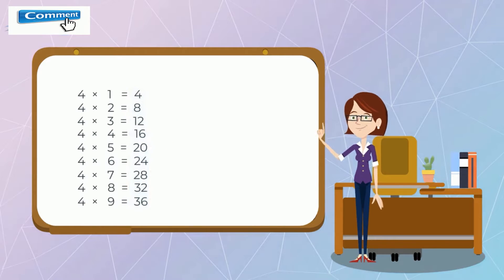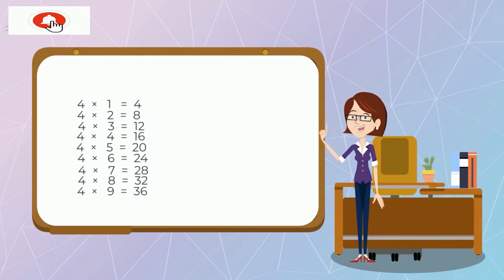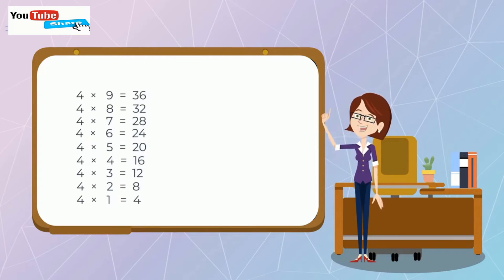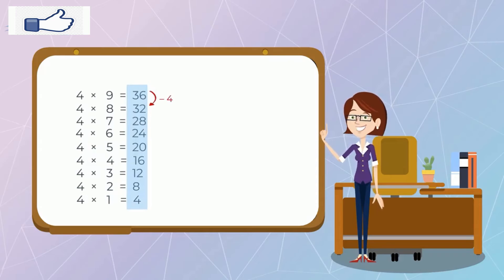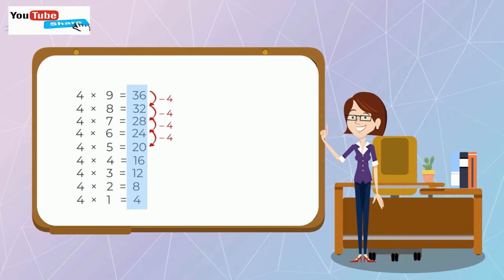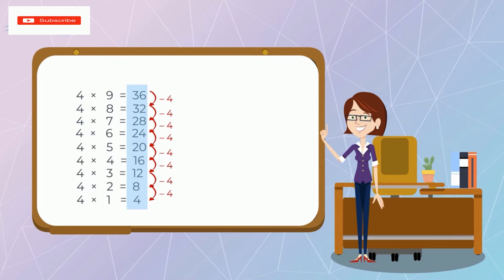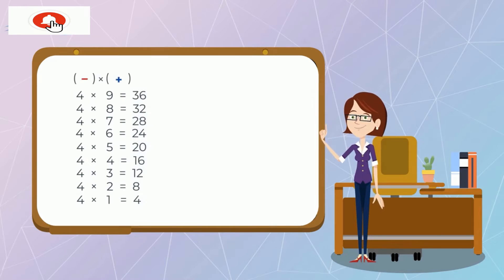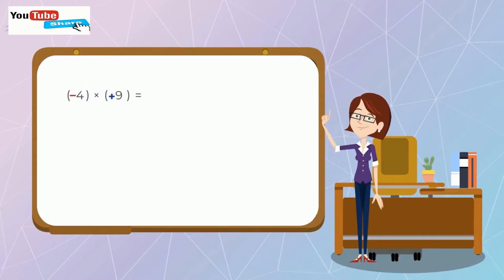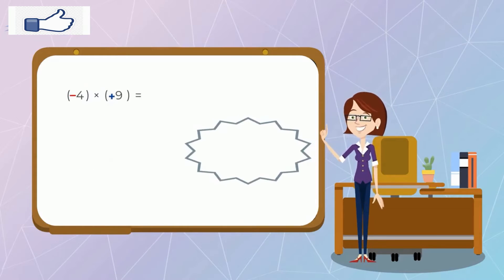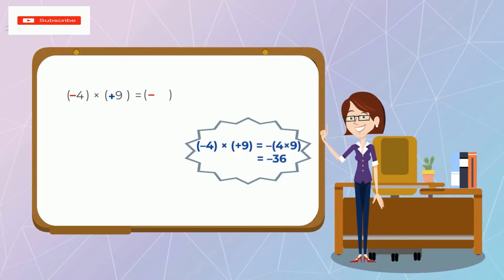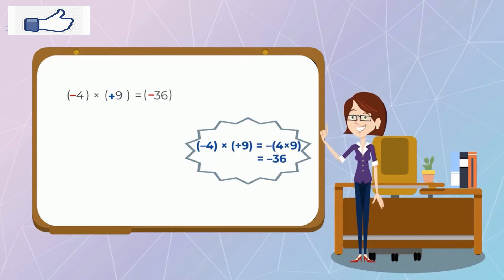Si invertimos el orden del multiplicador, vemos que el producto disminuye de 4 en 4. En el caso de la multiplicación de un número negativo por un número positivo, el producto se obtiene de colocar el signo menos y multiplicar el valor absoluto de los números.